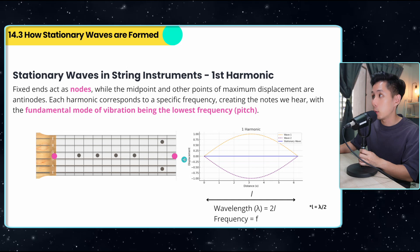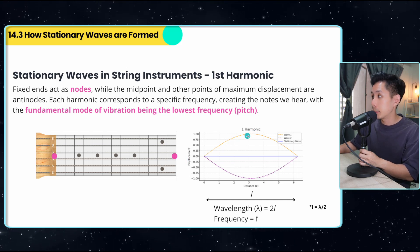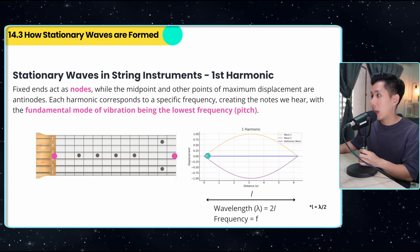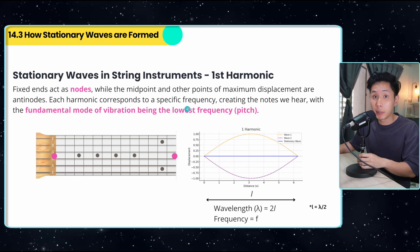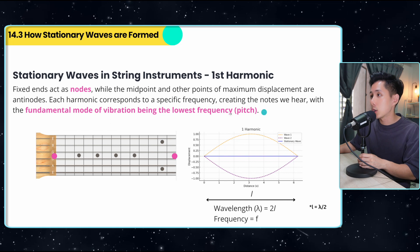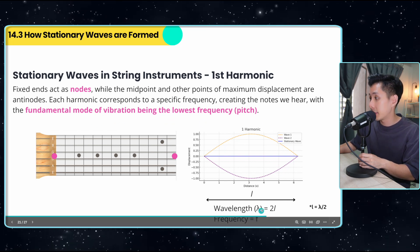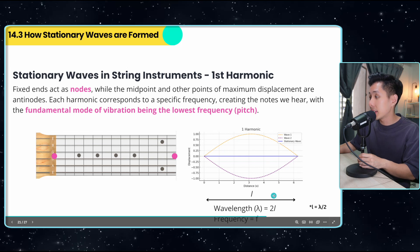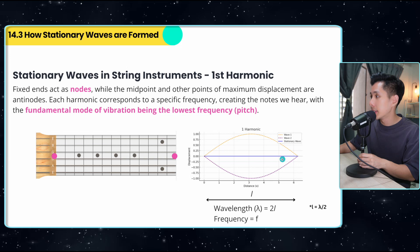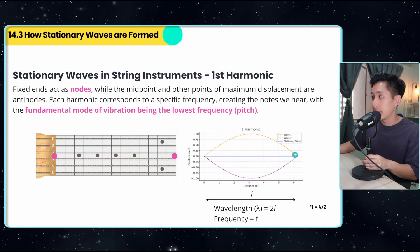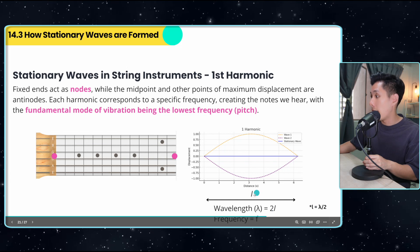So fixed end here, they will serve as nodes, and the midpoint will be the maximum displacement, which is the antinodes. So we have two nodes and one antinode, and each harmonic corresponds to a specific frequency. So first harmonic showcases the fundamental mode of vibration being the lowest frequency. So f is the frequency, and the lambda here is 2l. So this distance between the two nodes is l. So as we have learned, the distance between nodes is half the wavelength. That's why a full wavelength will be equal to 2l here.